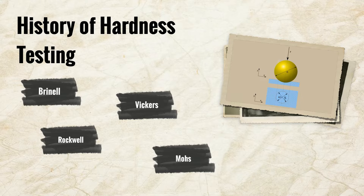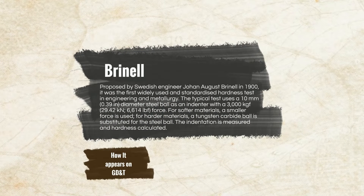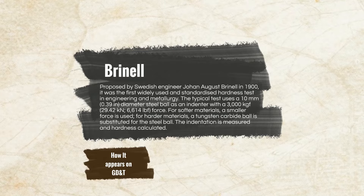Starting with the Brinell method — proposed by Swedish engineer Johan August Brinell in 1900, it was the first widely used and standardized hardness test in engineering and metallurgy. The typical test uses a 10mm (0.39 inch) diameter steel ball as the indenter with a 3,000 kilogram-force (29.42 kilonewtons, or 6,614 pounds of force). For softer materials a smaller force is used, and for harder materials a tungsten carbide ball is substituted. The indentation is measured and hardness is calculated.